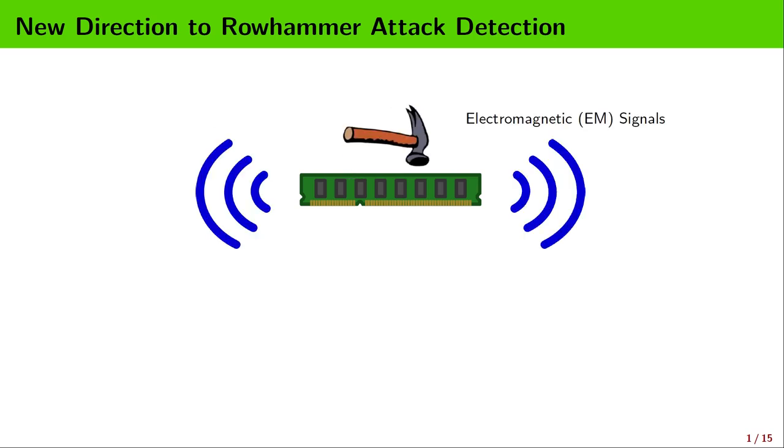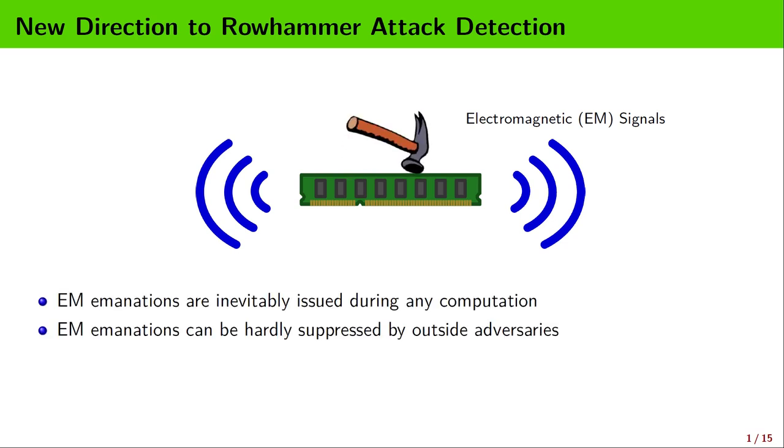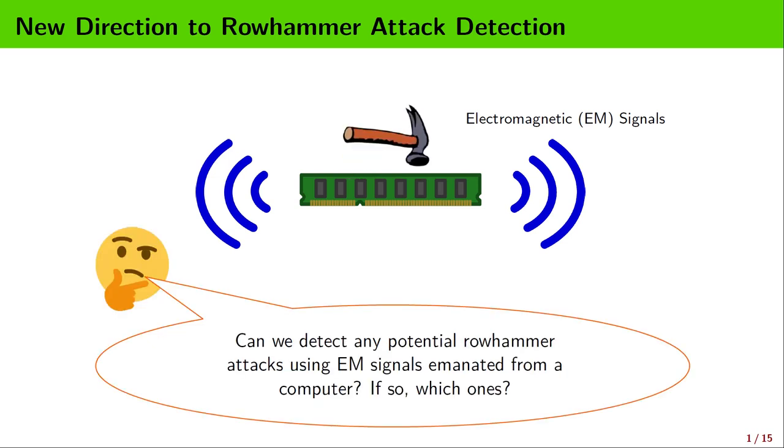Here, we propose to address the problem of Rowhammer attack detection from a new perspective, which is to find patterns correlated with Rowhammer attacks in some EM signals. The rationale is that EM signals are inevitably issued and can hardly be suppressed by an outside attacker. The question is, is this feasible?